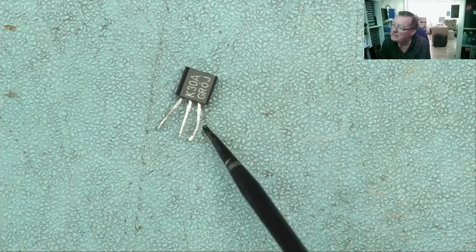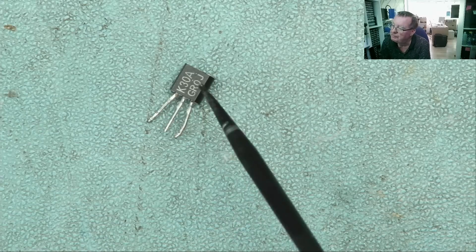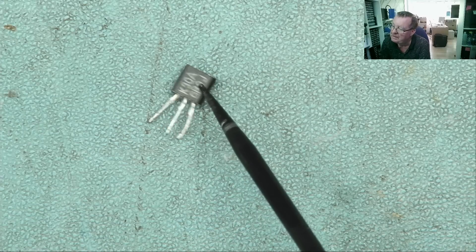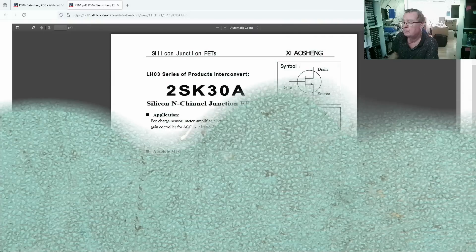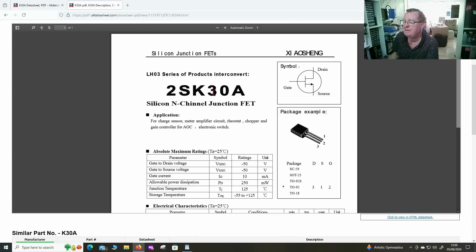So here is a JFET. These are salvage ones, K30A or 2SK30A. Let's have a look at the datasheet. And here we are, 2SK30A. You'll see straight away another variation on this symbol. This is an N-type with the arrow pointing outwards. P-type would be pointing inwards.